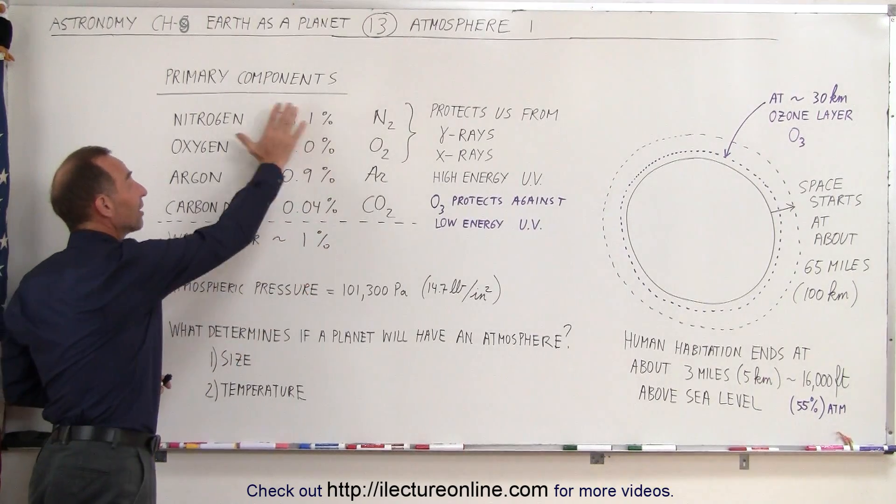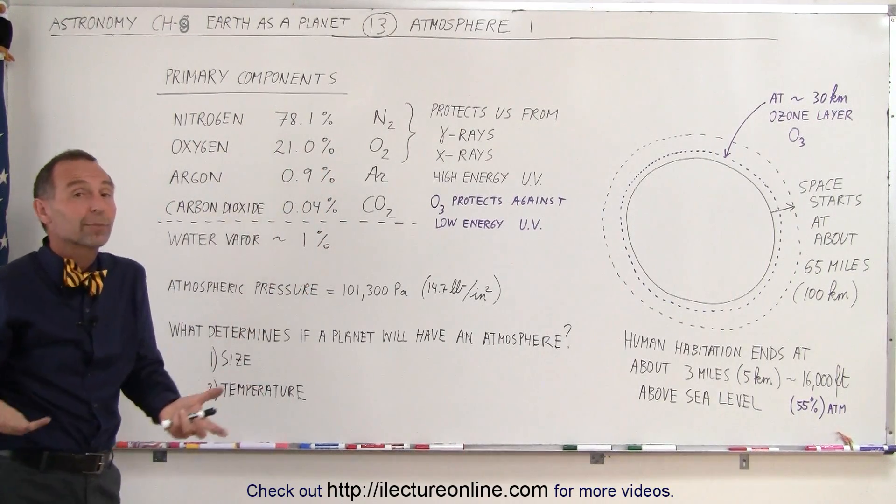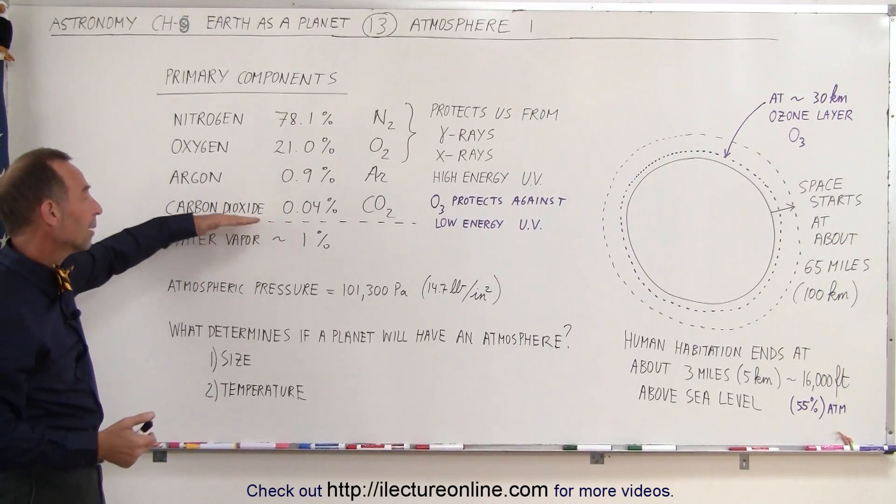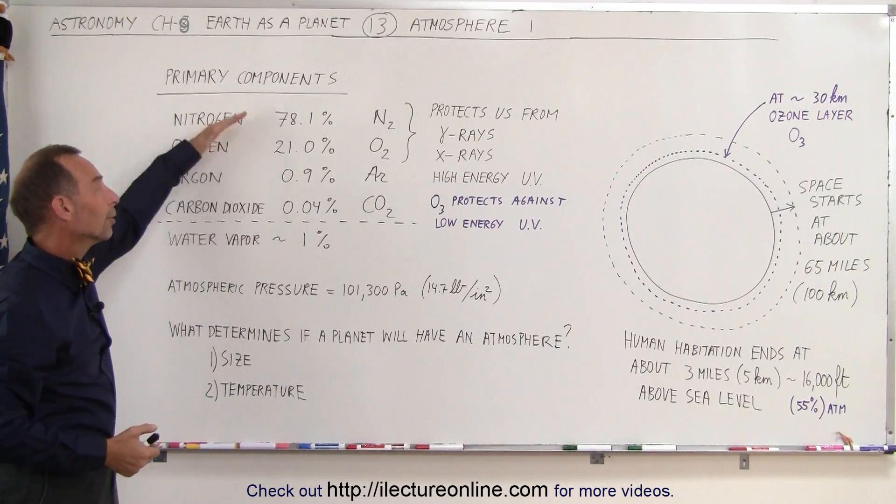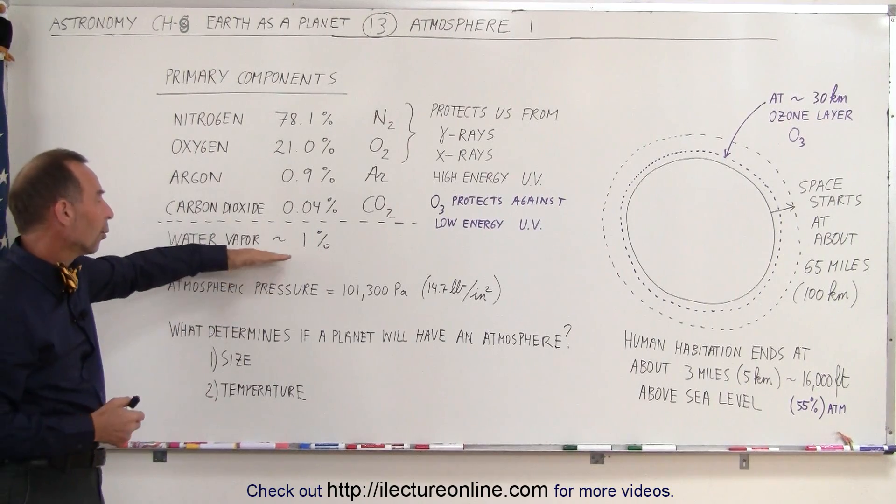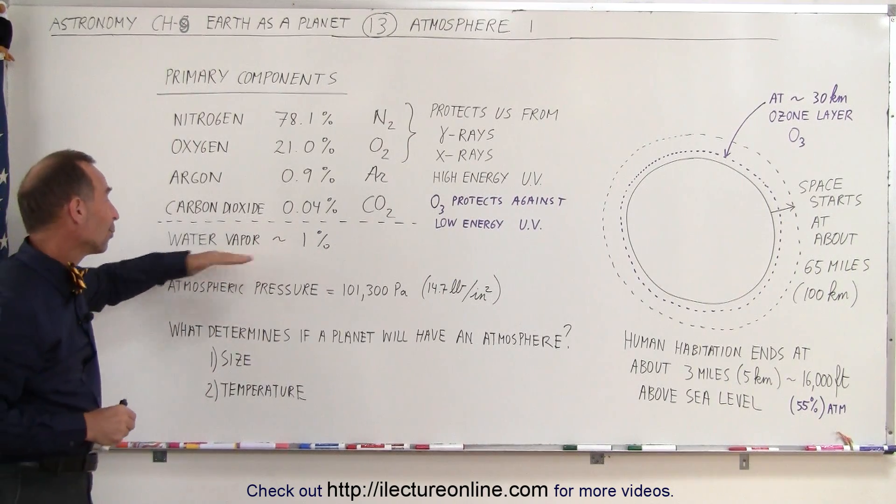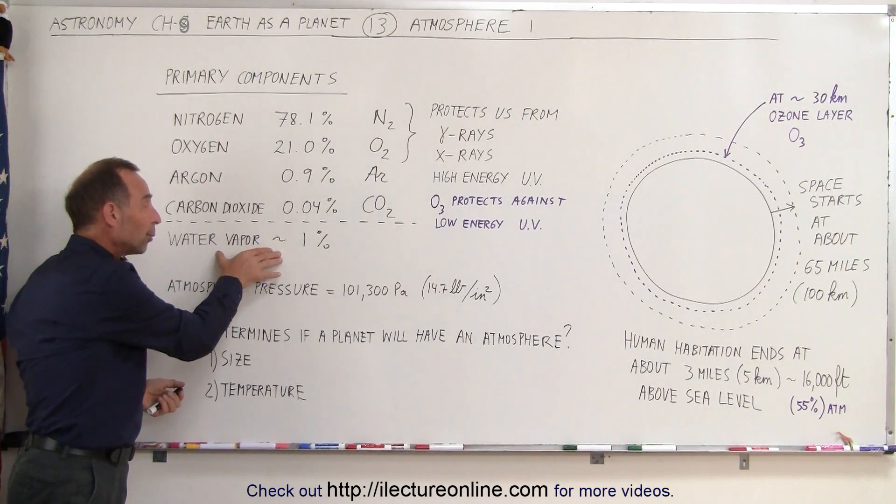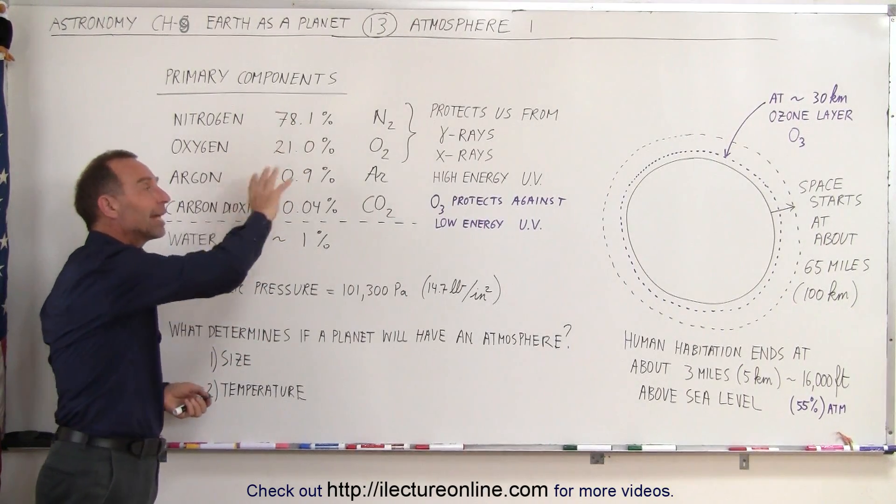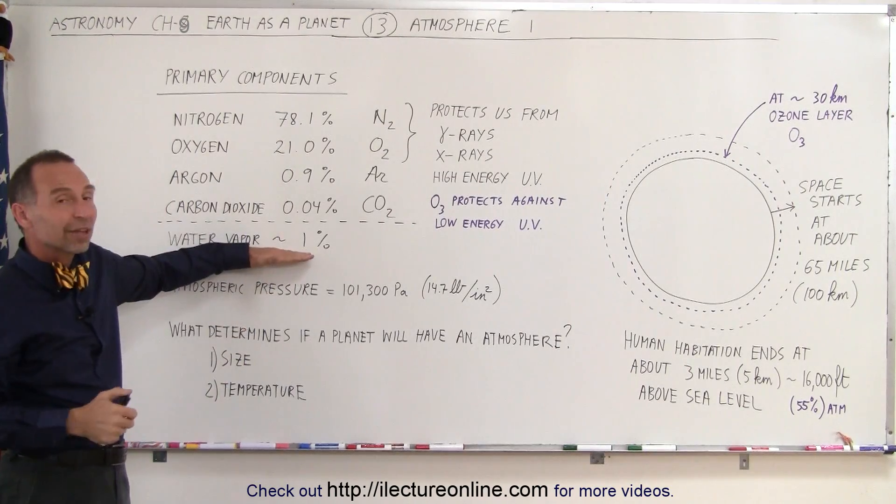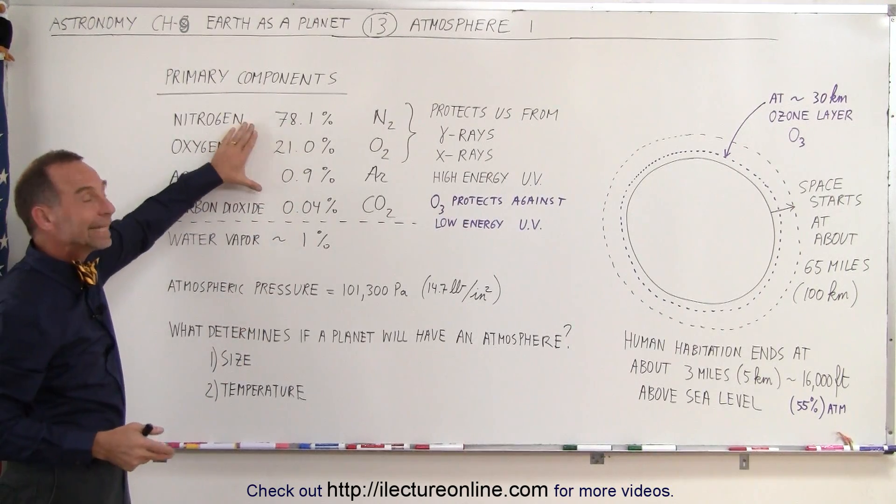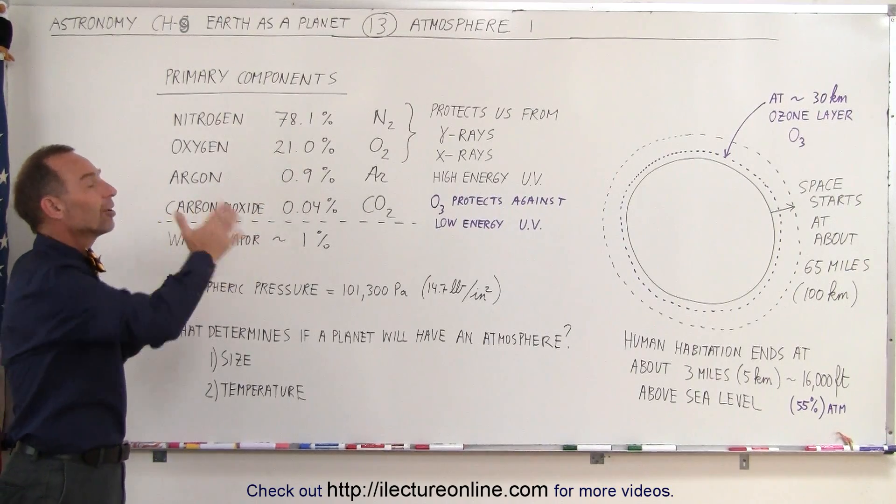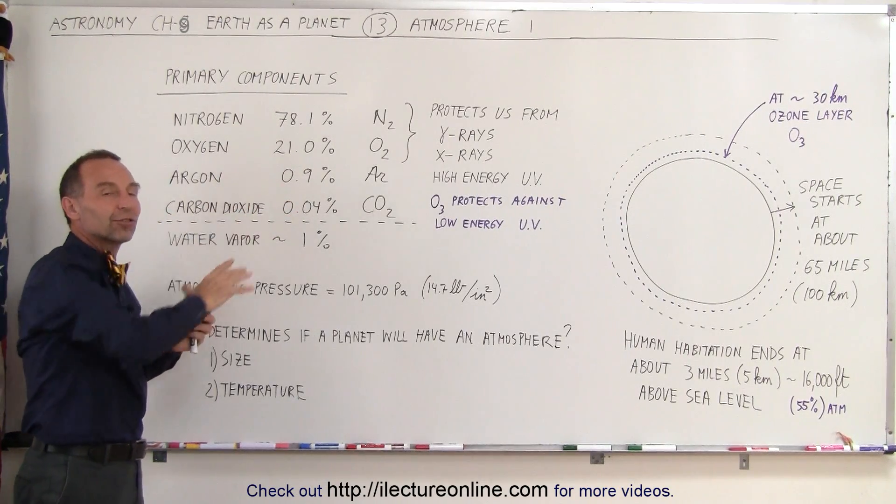Since the rest of these gases already make up 100% of the atmosphere, where do we get the extra 1% for the water vapor? It turns out that water vapor will actually displace the other gases. If there's 1% water vapor, there only will be 99% of the remaining gases, so it'll actually displace the other gases.